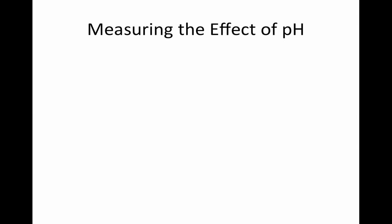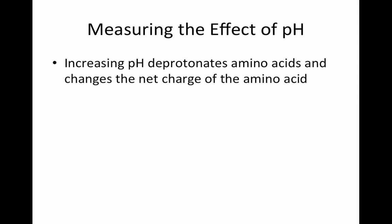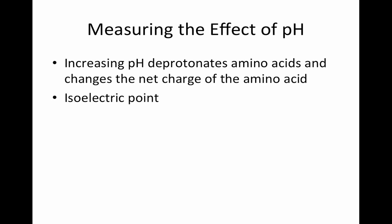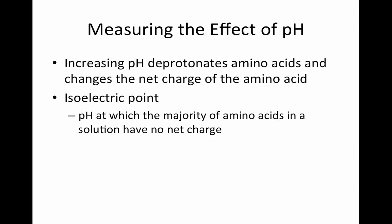Since the charge of amino acids is important to protein structure, it is worth further investigating. Increasing pH will deprotonate amino acids and make them more negative, so we need a way to quantify this effect of pH on charge. This is where the isoelectric point comes in. The isoelectric point is defined as the pH at which the majority of amino acids in a solution will have no net charge. The formula is: pI equals pKa1 plus pKa2 divided by 2 — essentially an average of two pKa values.